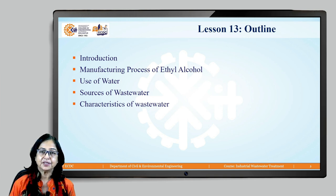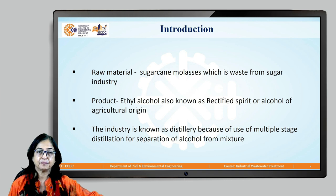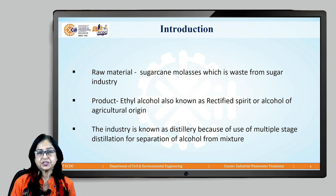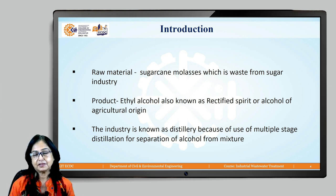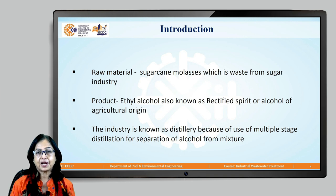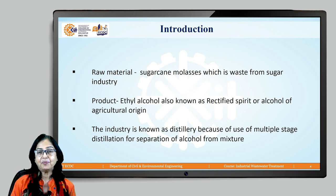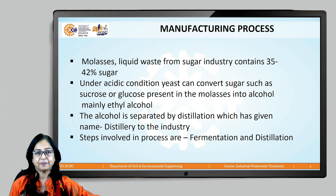The topics covered in this lecture are: introduction, manufacturing process of ethyl alcohol, use of water, sources of waste water, and characteristics of waste water. The raw material is molasses, waste from the sugar industry, hence this industry is also labelled as agro-based. The product is ethyl alcohol, rectified spirit, also known as alcohol of agricultural origin. The industry is given the name distillery because it uses a multiple-stage distillation process for separation of ethyl alcohol from the mixture.